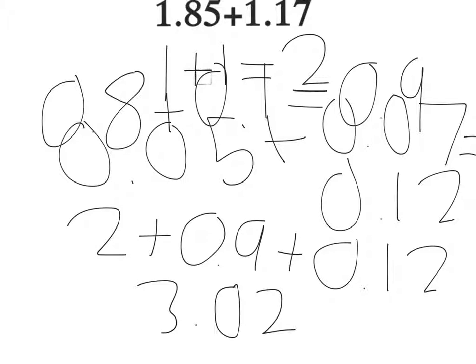So, 1 and 85 hundredths plus 1 and 17 hundredths equals 3 and 2 hundredths.